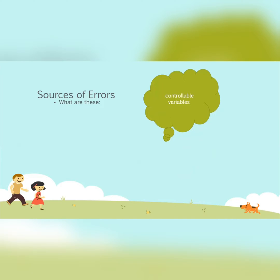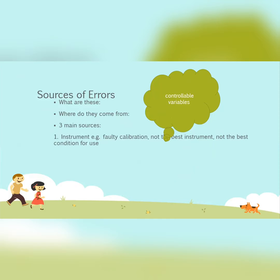Some people will consider sources of errors to be limitations, but let's look at three main sources. First, your instrument: here you have things like faulty calibration, or not using the instrument under the best test conditions. It's not operating optimally. But these things you can actually tweak — you can calibrate properly or use the instrument under the best conditions — so they are controllable, unlike true limitations.